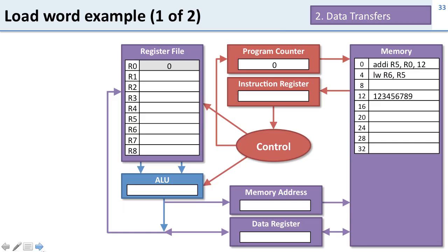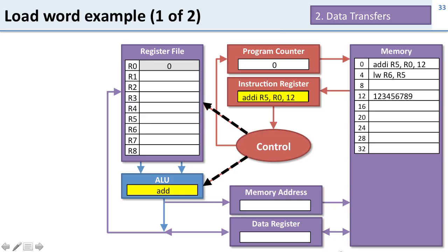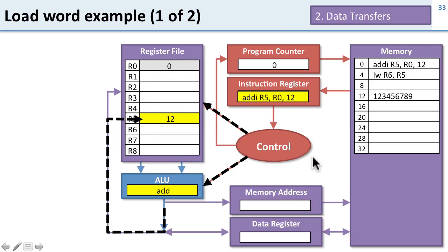Let's take a look at an example of doing a load word. Here's our program. We're going to do ADD-I R5, R0, 12 — this adds 12 and 0 and stores it into R5. Then we're going to load word: load the data at memory address in R5 (which will be 12) into register R6. We start with instruction 0, move it into the instruction register, and control tells the ALU to do an add. Since this is an add immediate instruction, we get data from R0 and the immediate value 12 directly from the instruction. We add those together and write back 12 into R5.